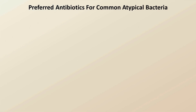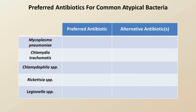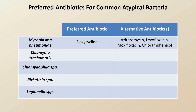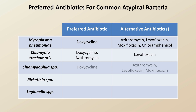The preferred antibiotics for each atypical bacteria are based not only on in vitro activity, but also on clinical response as demonstrated in the available primary literature. The preferred treatment of Mycoplasma pneumoniae is doxycycline, with any of the others listed as reasonable alternatives. Chlamydia trachomatis is best treated with either doxycycline or azithromycin, with levofloxacin listed as an alternative. Moxifloxacin against this bacteria has not been studied in a clinical setting.